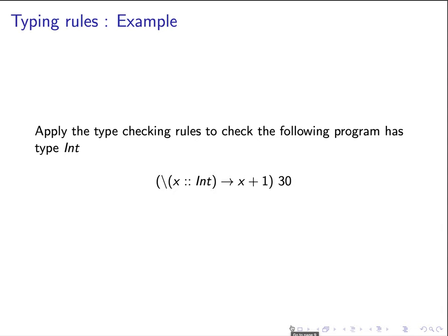We would like to apply the type checking rules to check the following program has type integer. The program is basically applying a lambda abstraction with x of type int as the input argument, and we would like to return x plus 1 as the body. We apply this lambda expression to the integer 30.